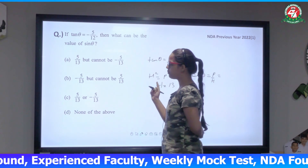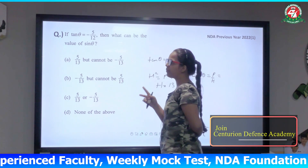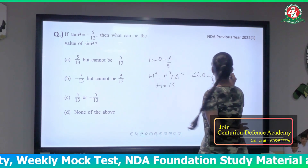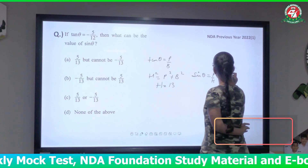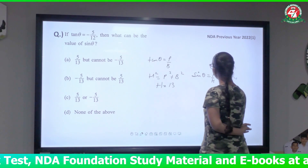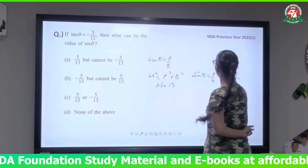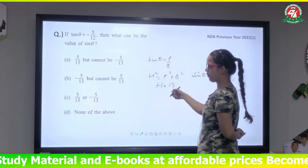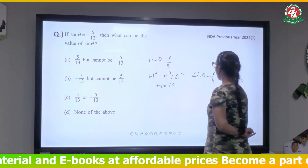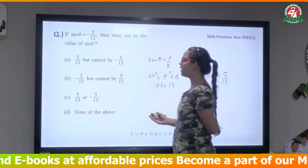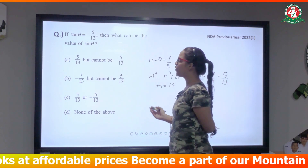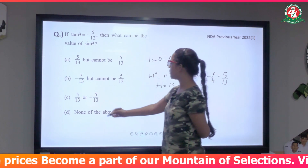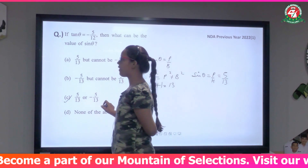Sin θ belongs to two quadrants. We are given that tan θ = -5/12, which is negative. Tan is negative in the second quadrant and the fourth quadrant. Sin θ is positive in the second quadrant and negative in the fourth quadrant. The perpendicular is 5 and hypotenuse is 13, so we calculate from this.